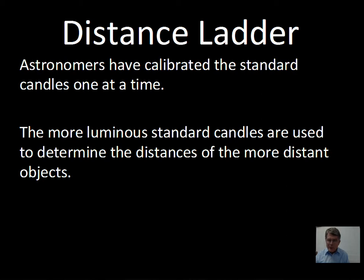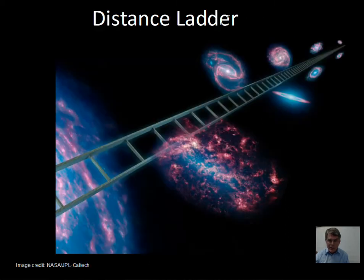This concept is not exactly the way it works, but it's very close. There is something called a distance ladder of standard candles, and there are different true brightnesses to these standard candles. The dim ones we use close by us, and then we use them to calibrate the brightness of more distant standard candles. Here's a graphic of this — we're using a ladder to get out to the more distant objects.